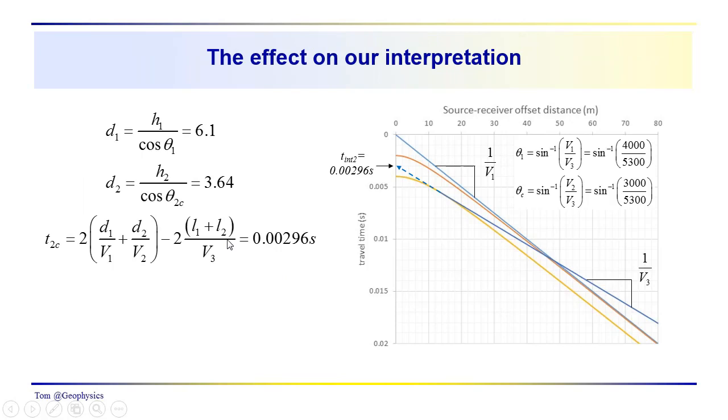So this is our time intercept. Now D1 is going to be 6.1, D2 is going to be 3.64. If we calculate the critical, if we calculate the intercept time for the critical refraction, and extend that over to the x equals zero to the time axis, we get 0.00296 seconds. So these are thin layers, so the arrival time is very early. So this would be a shallow, high-resolution refraction survey that we'd be conducting.